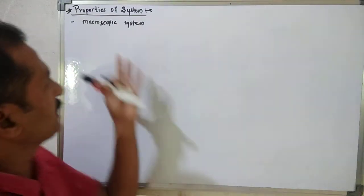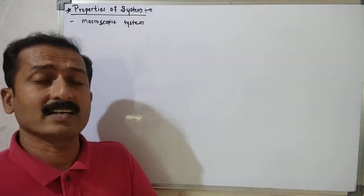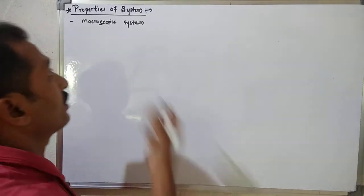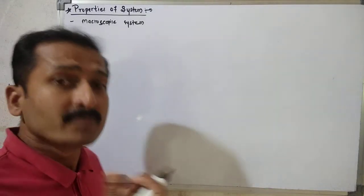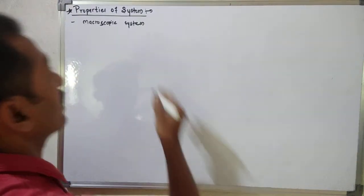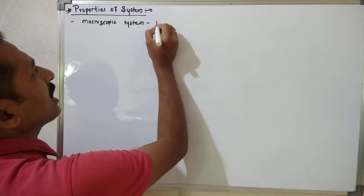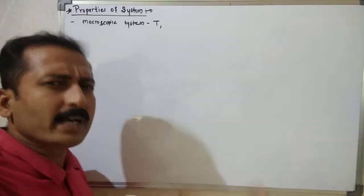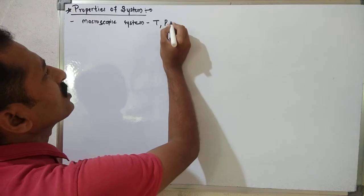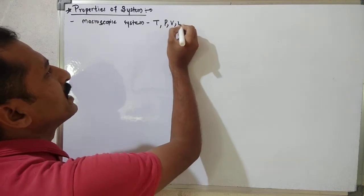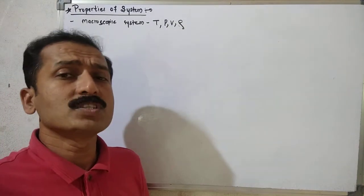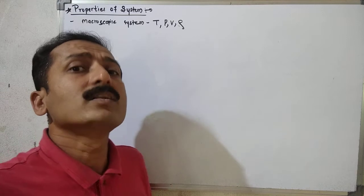We are talking about macroscopic system and macroscopic particles. In thermodynamics, the variables we use to describe a macroscopic system include temperature, pressure, volume, number of moles, and density. Such properties we use generally for describing the macroscopic system.